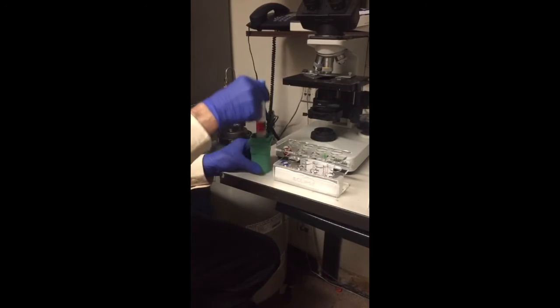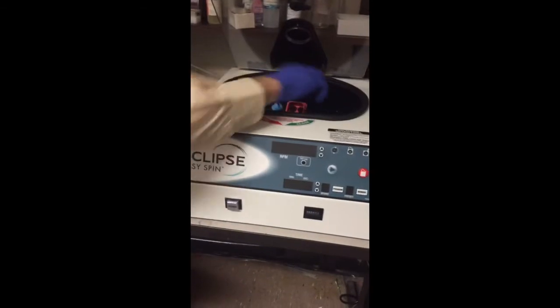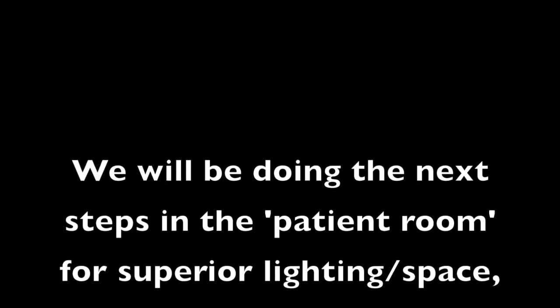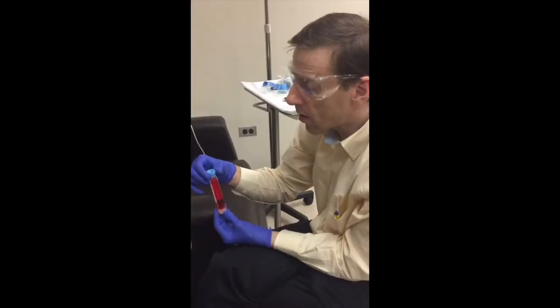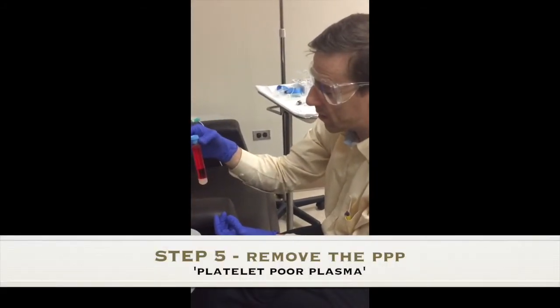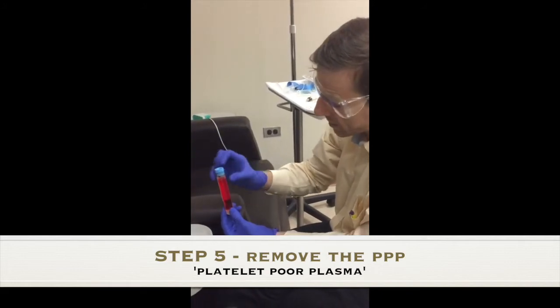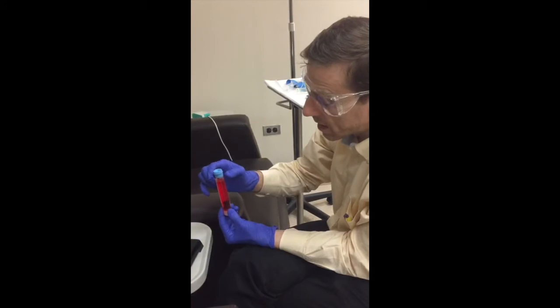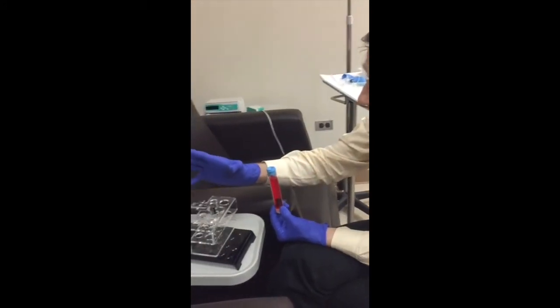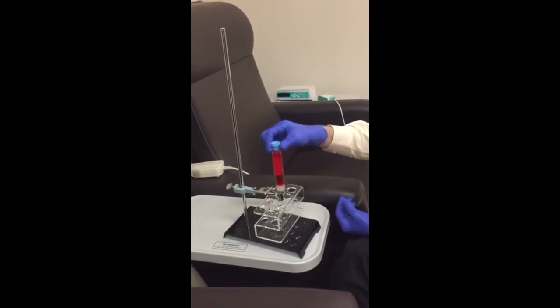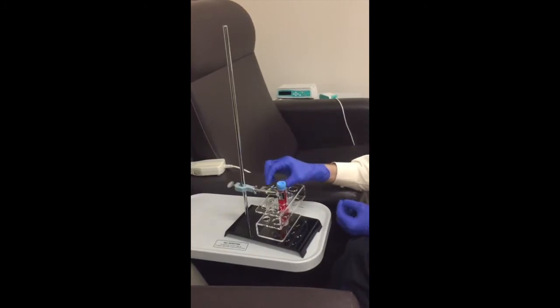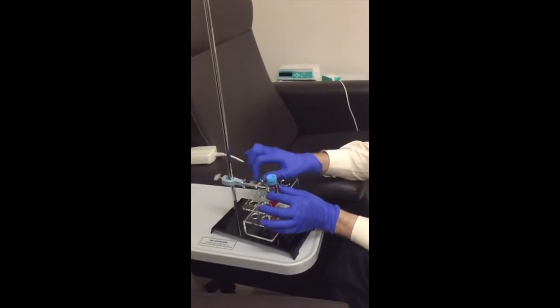Once you take this out, you can put this in a test tube holder. We've taken the blood from the centrifuge. It's all spun down. And now we have to extract the platelet poor plasma. The way we do this is you have this ring stand test tube holder, test tube rack setup. You put the vacutainer as such and you secure it in the test tube holder.